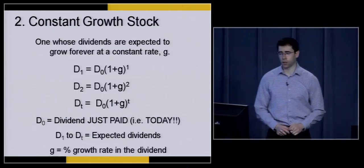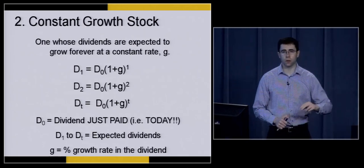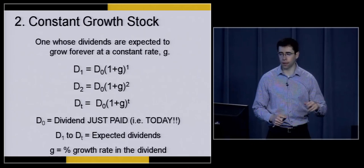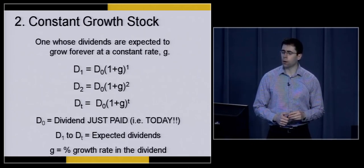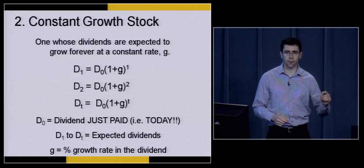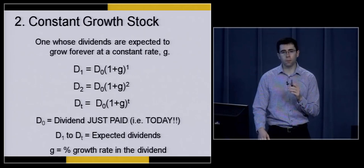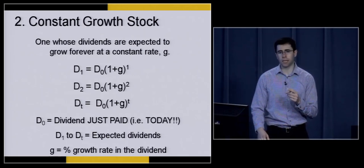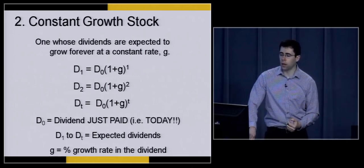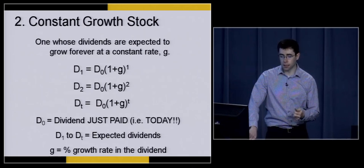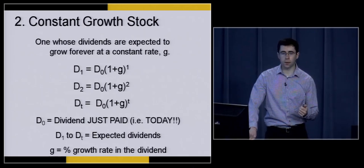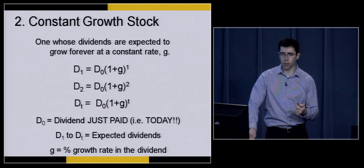For the constant growth valuation method, we assume that future dividends are calculated as D0 — the dividend today — multiplied by (1 + G)^T, where G is the growth rate and T is the number of periods. So the dividend at the end of year two equals D0 times (1 + G) squared — we're allowing today's dividend to grow at 1 + G for two years. That's how we calculate future dividends under the constant growth assumption.